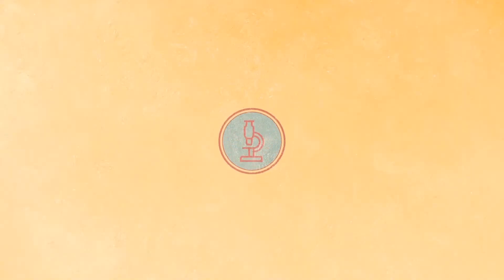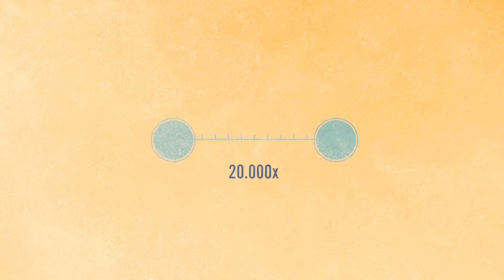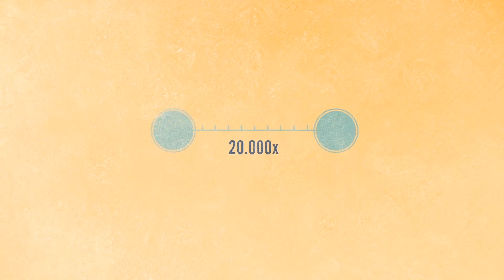To examine very small objects, we use microscopes. Light microscopes, however, have resolution barriers. According to Ernst Abbe's research, a magnification of 20,000 times is the limit, past which two adjacent points can no longer be distinguished from each other.